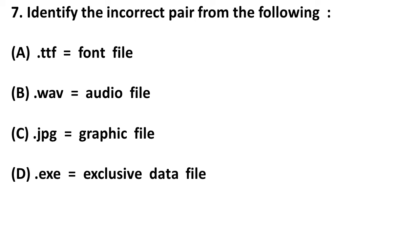Next question: identify the incorrect pair from the following. TTF is for font file — correct. WAV is for audio file extension — correct. JPG is for graphic image file — also correct. The only incorrect one is .EXE, which is for an executable file, not an exclusive data file. So the incorrect pair is D — dot exe.